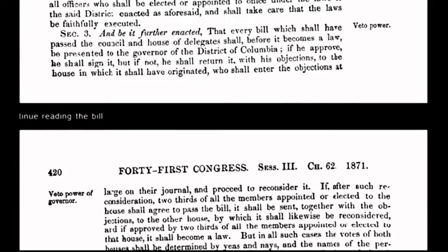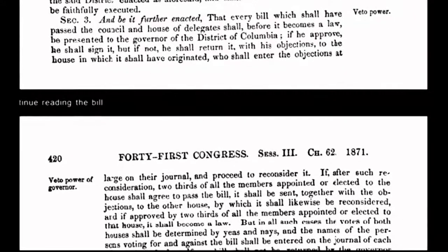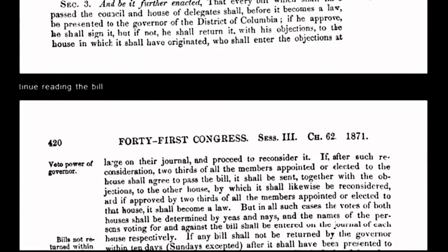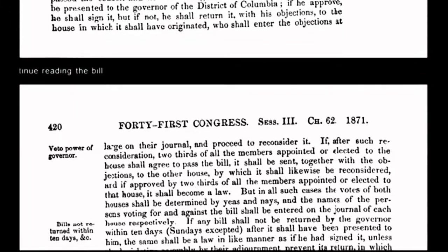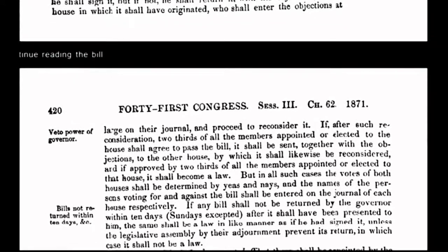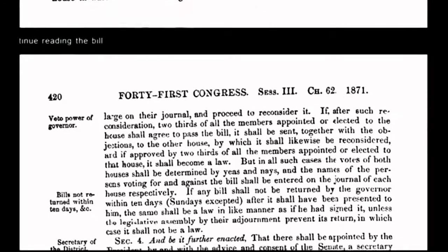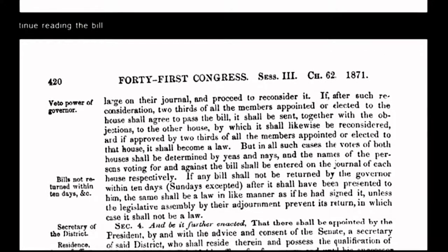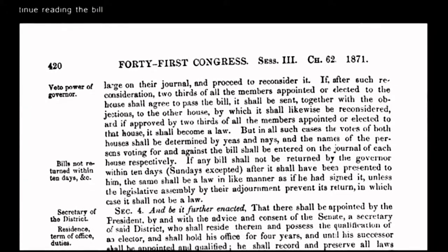This newly altered constitution was not intended to benefit the republic. It benefits only the corporation of the United States of America and operates entirely outside the original organic constitution. Instead of having absolute and unalienable rights guaranteed under the organic constitution, we the people now have relative rights or privileges. One example is the sovereign's right to travel, which has now been transformed under corporate government policy into a privilege that requires citizens to be licensed — an example would be passports.